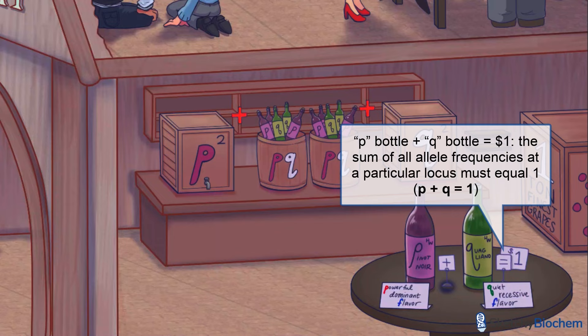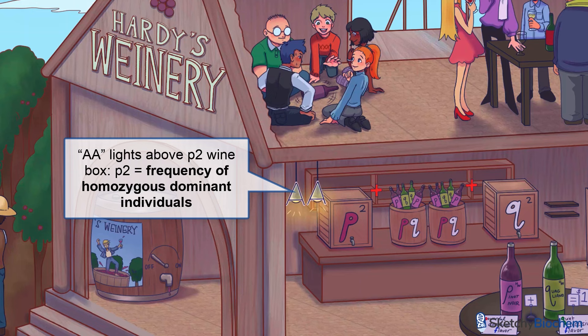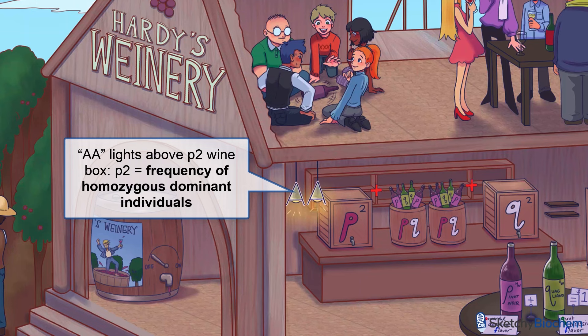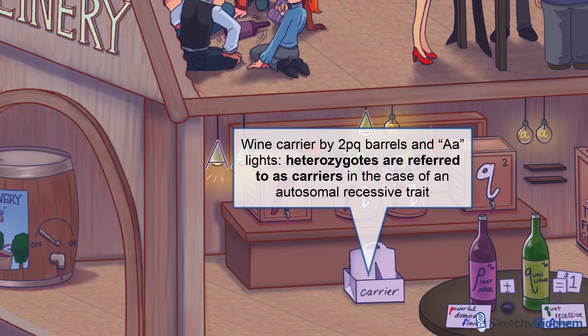Now we can start dissecting the Hardy-Weinberg equation using the hypothetical alleles big A and little a. P squared is the frequency of the homozygous dominant, or big A big A individuals, which you can see in these light fixtures above the squared P crate. Likewise, Q squared is the frequency of homozygous recessive, or little a little a individuals — hence the two light bulbs with the little a filaments above the square Q crate. And the two PQ allele gluttons get the best of both worlds: these are the heterozygous, or big A little a individuals, with one of each light type.